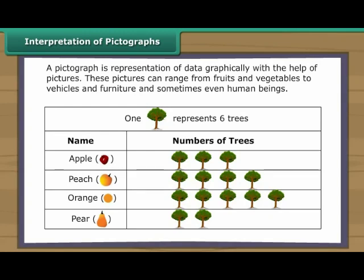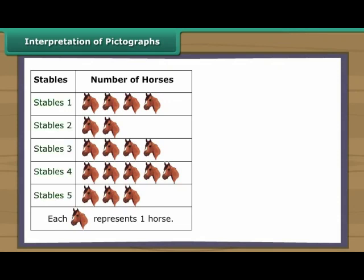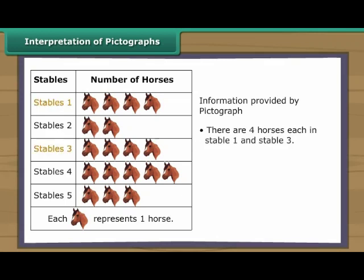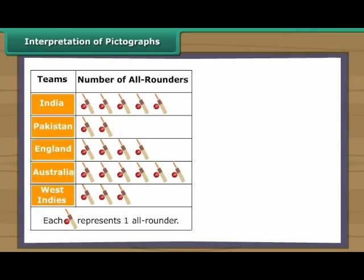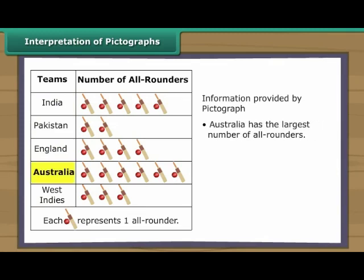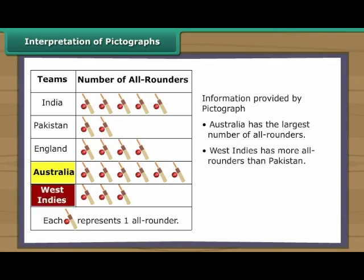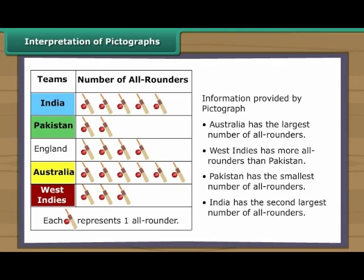Let us understand pictographs by interpreting the data they represent. This pictograph shows details of horses in five different stables in a village. Each picture of a horse represents one horse. There are four horses each in stable one and stable three. Stable four has the largest number of horses. Stable two has the least number of horses. This pictograph shows details of all-rounders in five cricket teams of the world. Each picture represents one all-rounder. Australia has the largest number of all-rounders. West Indies has more all-rounders than Pakistan. Pakistan has the smallest number of all-rounders. India has the second largest number of all-rounders.